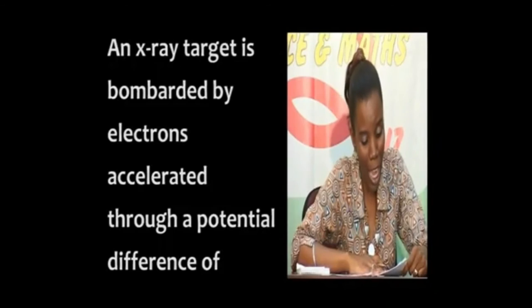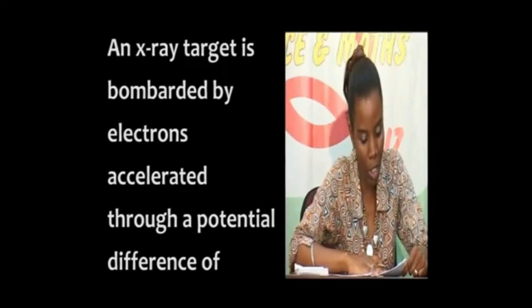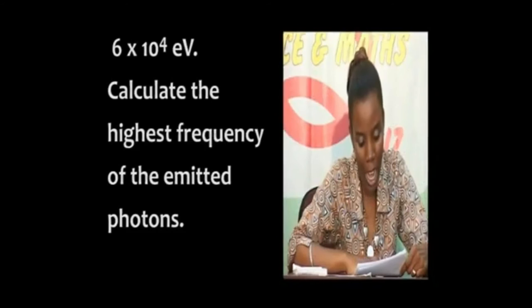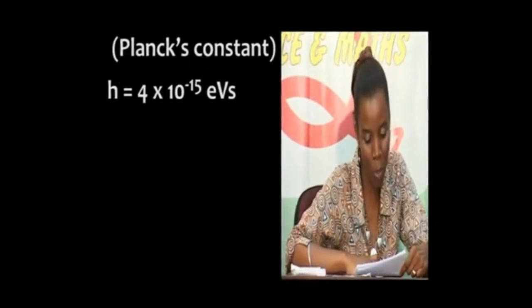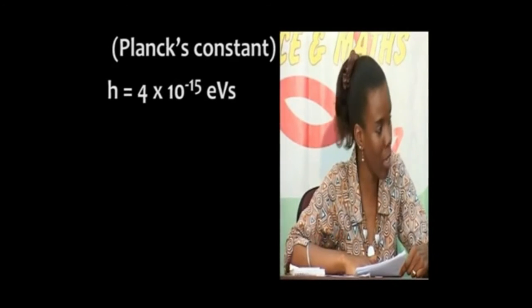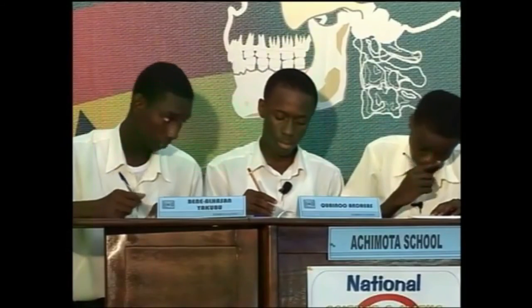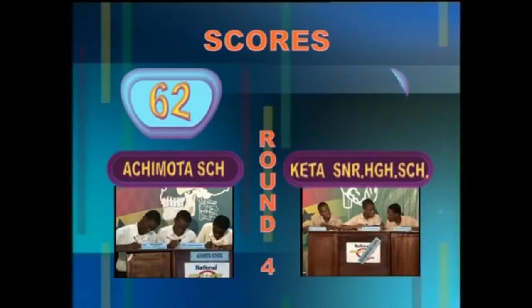Achimota: an X-ray target is bombarded by electrons accelerated through a potential difference of 6 times 10 to the power 4 electron volts. Calculate the highest frequency of the emitted photons. Planck's constant is 4 times 10 to the power negative 15 electron volt seconds. Yes, Frank. 1.5 times 10 to the power 19 hertz. That's right. At the end of round four, Achimota School has 62 points, Keta Senior High School has 60 points.